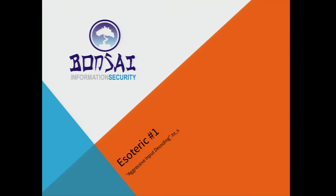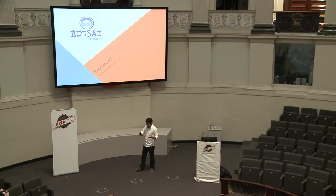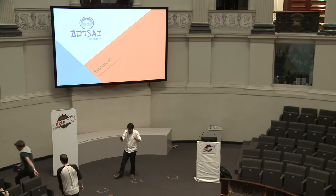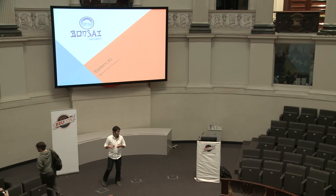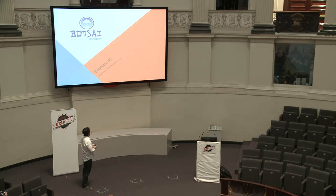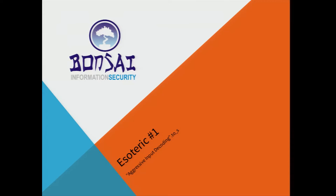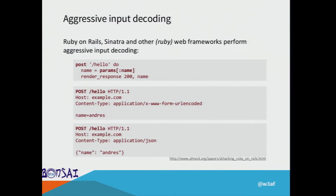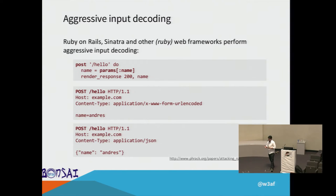I'm going to walk you through five different vulnerabilities, with no particular relation between them. The first one is aggressive input decoding, which leads to NoSQL injection. This aggressive input decoding is something that happens at least in Ruby on Rails, but I believe it also happens in development frameworks in Java and Python.